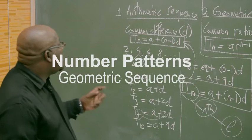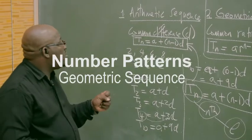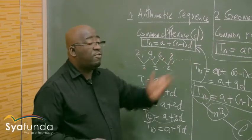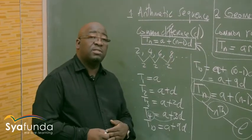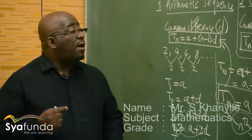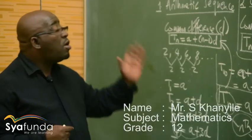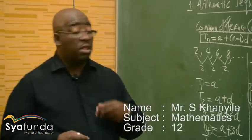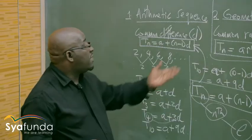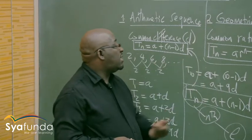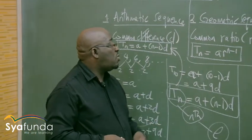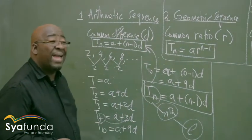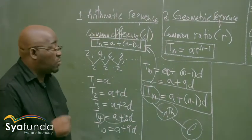The next thing I wanted to talk about is the general term for a geometric sequence. Remember that all these three sequences have their own general term. In this particular case, it is Tn = a × r^(n-1).